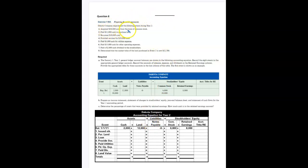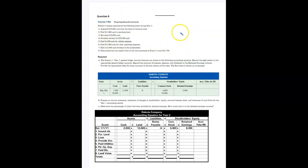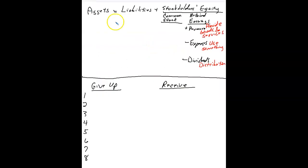Number one: acquired $30,000 cash by issuing stock. I've added a review of our accounting equation over here — assets equal liabilities plus stockholders' equity. The two components of stockholders' equity are common stock and retained earnings.